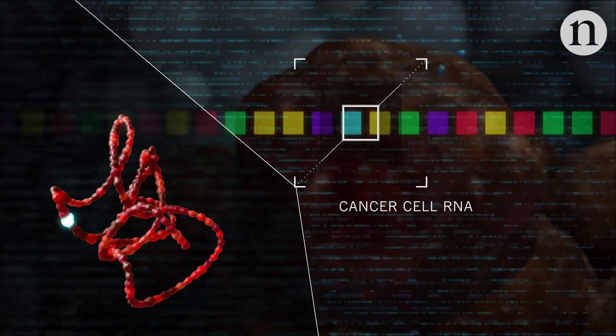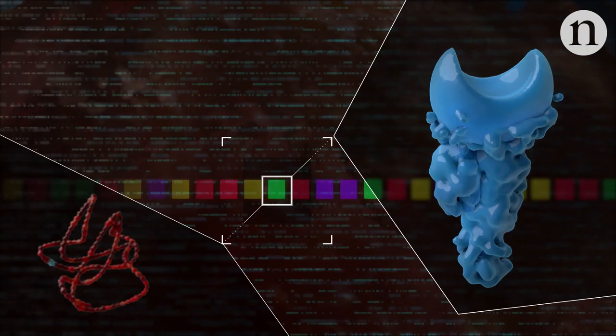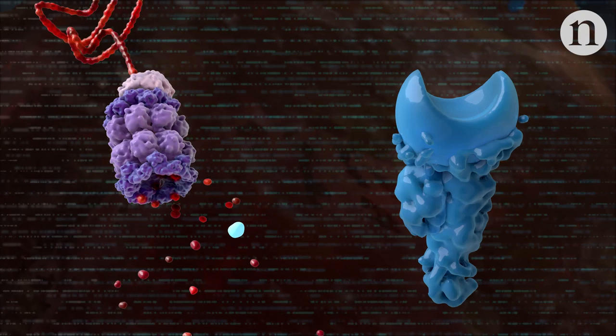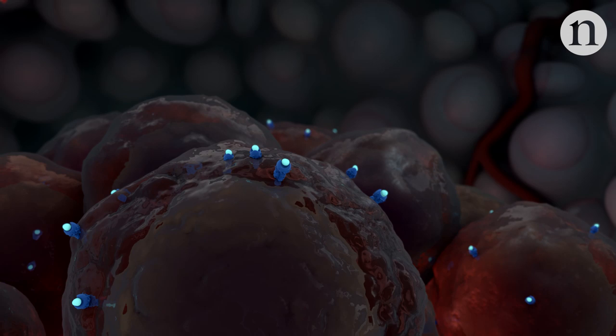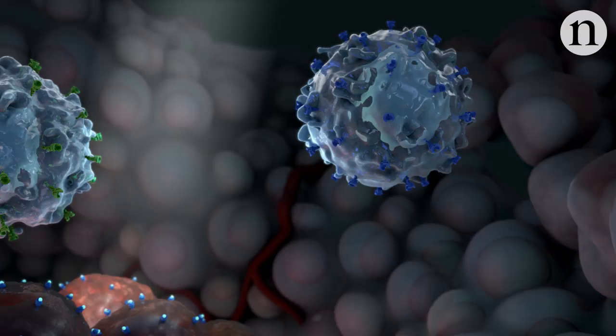Sequencing can also reveal what the MHC molecules will look like. And together with the mutant protein sequences, this can predict which neoantigens cells will display. But this is only half the story. Because even when neoantigen MHC complexes are produced, the immune system might still miss them and fail to respond to the threat.